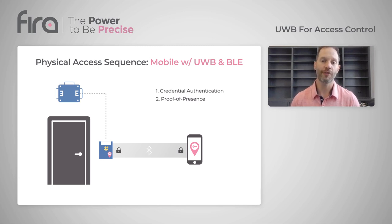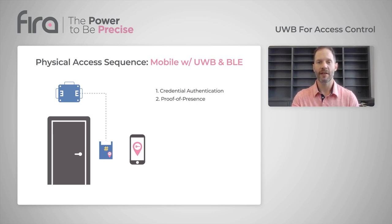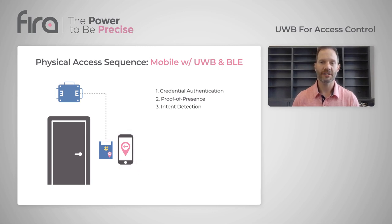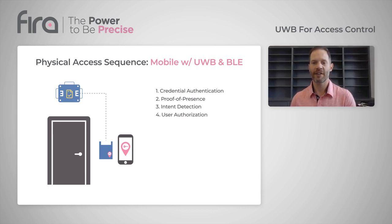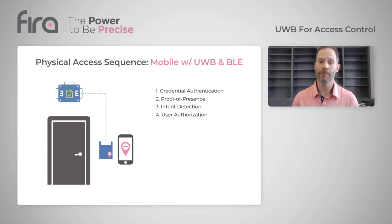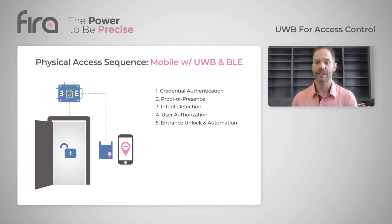Using the secured fine-ranging capability of UWB, we're able to determine the user's intent by way of the vector as they move towards the opening. When they cross that threshold and intent is detected, the reader releases the card number to the controller and user authorization occurs, whereby the controller checks that user's identifier against a whitelist to determine if the user is entitled to pass through this door, under these conditions. If that entitlement is confirmed, the controller triggers an unlock sequence, and door automation ensues.